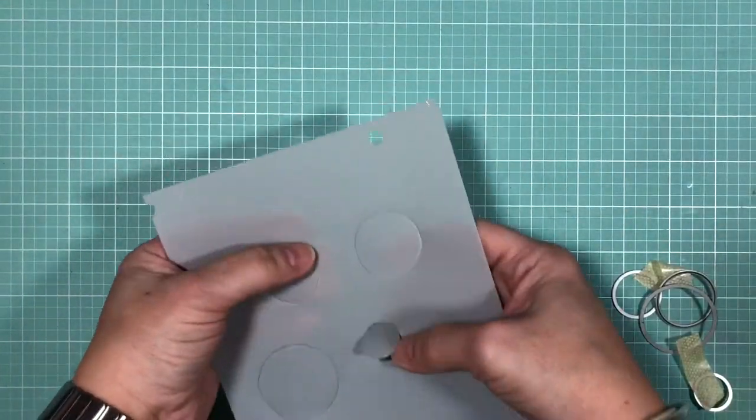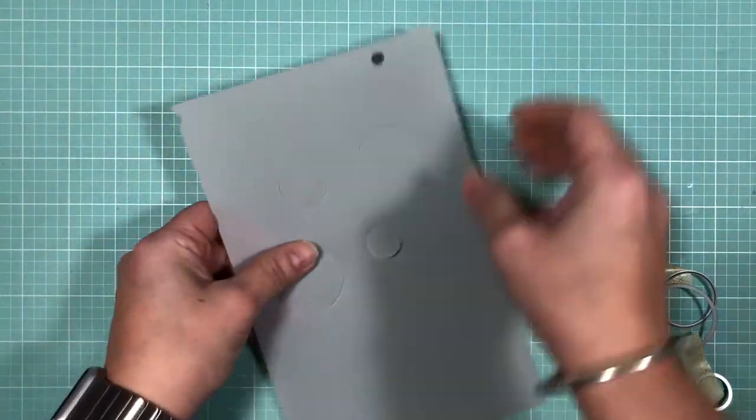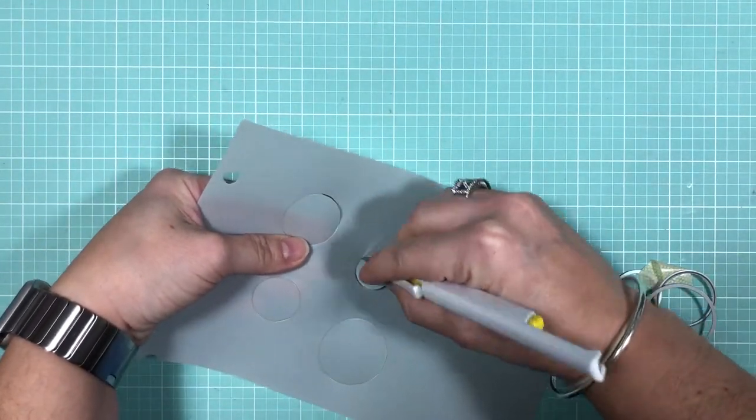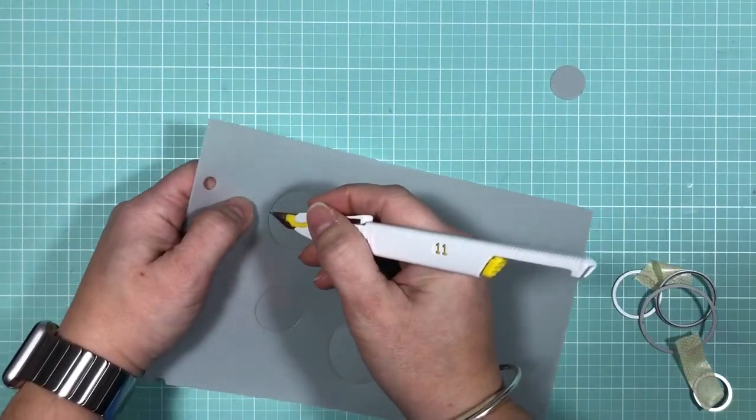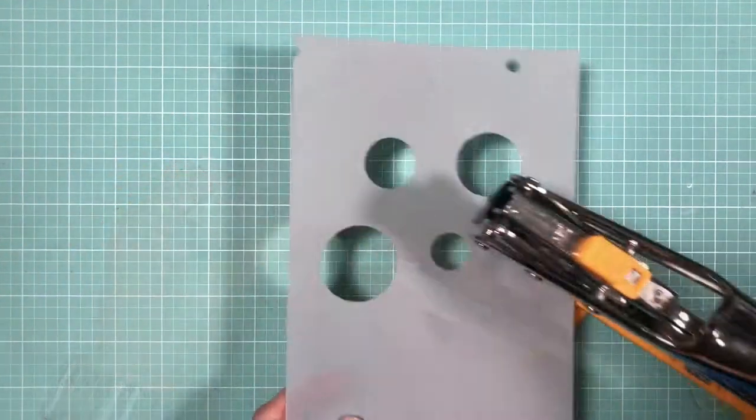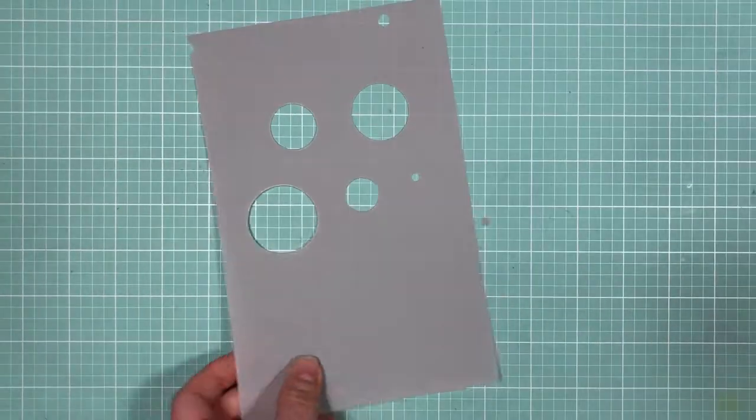As you can see, the dies didn't go all the way through, and I'm just going to take my pen blade and finish cutting these circles out. This plastic divider was quite thick, and alternatively you could probably use an acetate sheet to do the same thing. For some reason, I could not find my smaller circle dies.